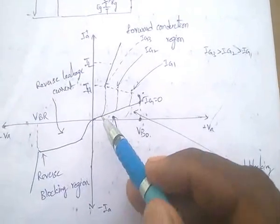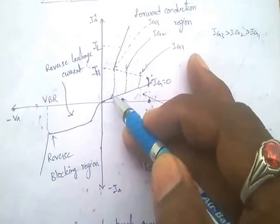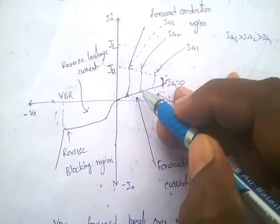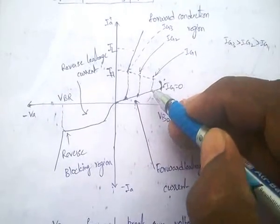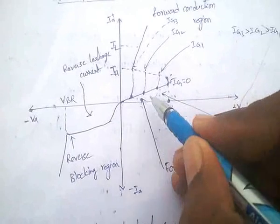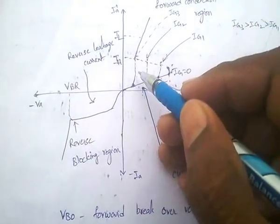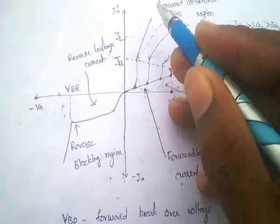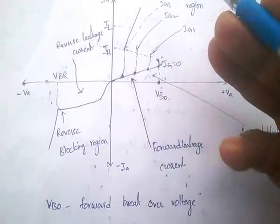We can also control the SCR by applying a gate signal. If we give the gate signal at a particular point, the SCR will start conducting and give output from that point. If we give the gate signal earlier or later, conduction starts from that respective instant. This confirms that the SCR is a controlled device — we can control the instant of conduction.